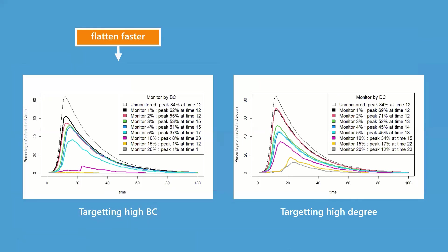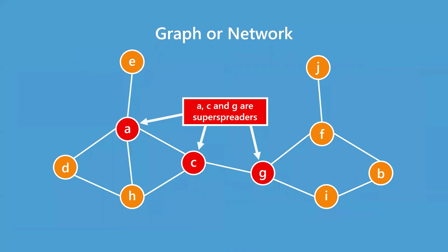By targeting students with high betweenness centrality, the curve of infection was flattened faster, compared to when we targeted students with high degree.